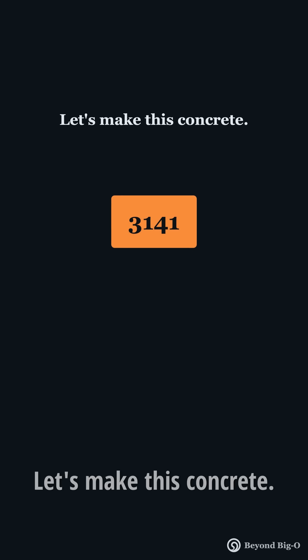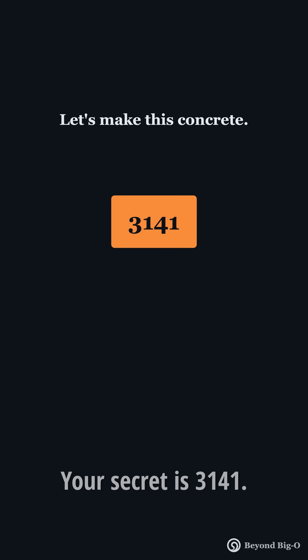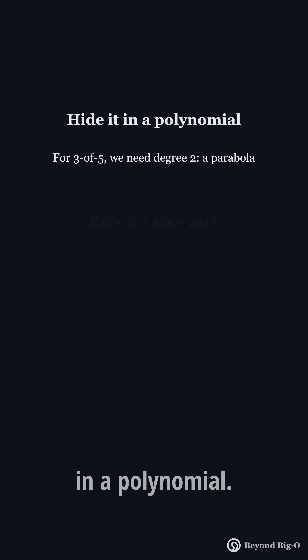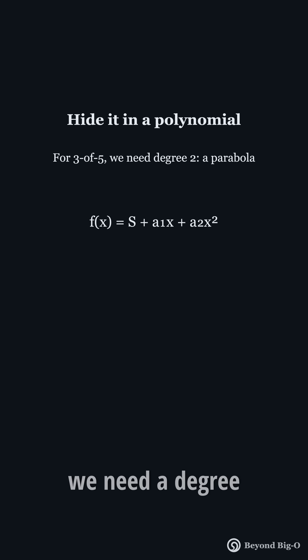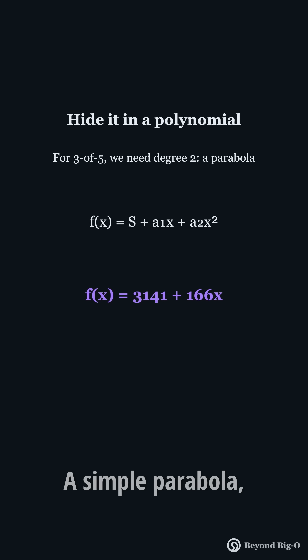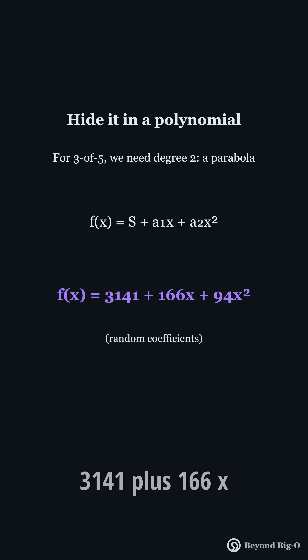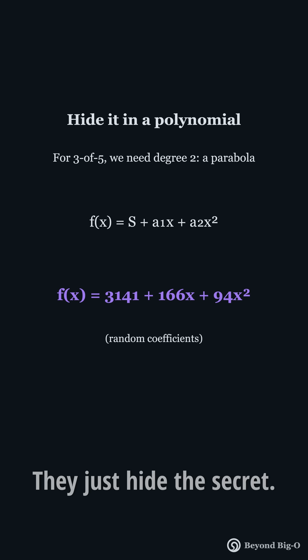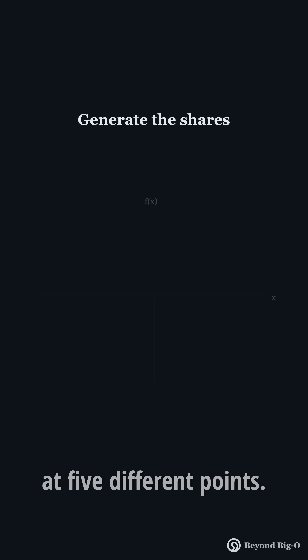Let's make this concrete. Your secret is 3,141 — maybe it's a private key you want to protect. We'll use a 3-of-5 scheme: three shares needed, five shares total. We hide the secret as f(0) in a polynomial. For a 3-of-5 setup, we need a degree-2 polynomial — a simple parabola. Let's say f(x) = 3,141 + 166x + 94x². Those extra numbers are random — they just hide the secret.